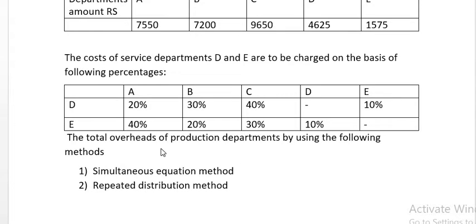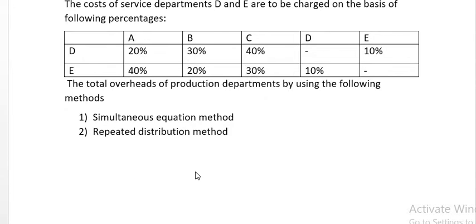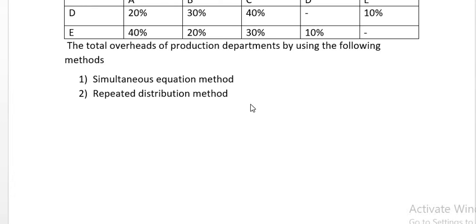We need to calculate the total overheads of production departments using the following methods. First, the Simultaneous Equation method (Simon-Tensley equation method). Second, the Repeated Distribution method. Let us start with the first method: the Simon-Tensley equation method.